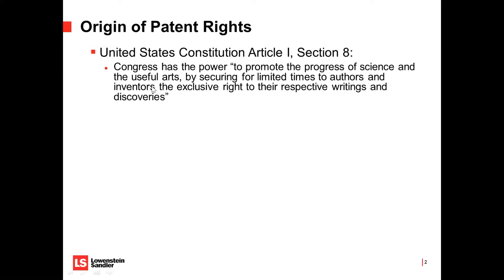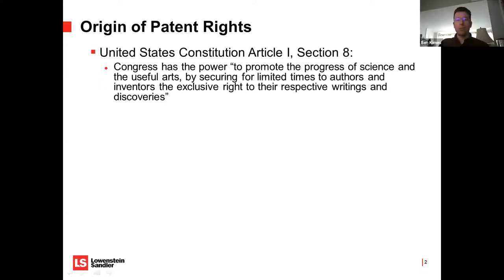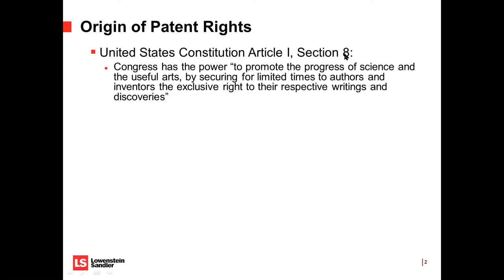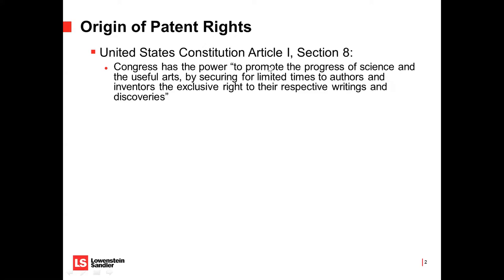In the US, all patent law is based on one small section of the Constitution — Article 1, Section 8. It says that Congress has the power to promote the progress of science and give people exclusive rights to their inventions. Just based on that one clause, we have the entire US Patent and Trademark Office with tens of thousands of employees.